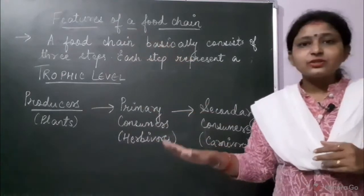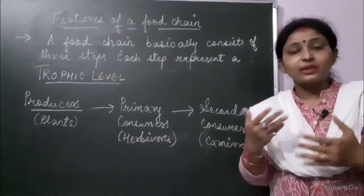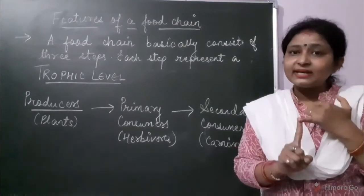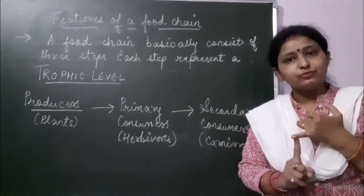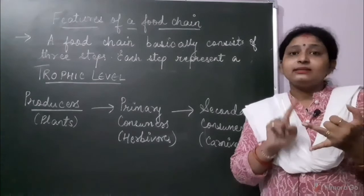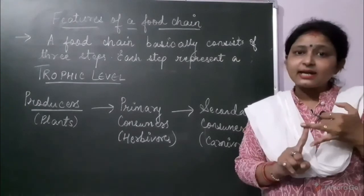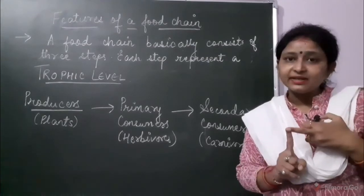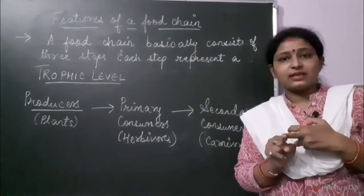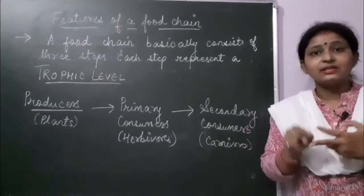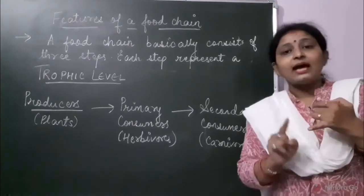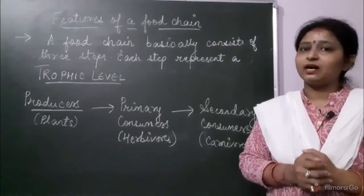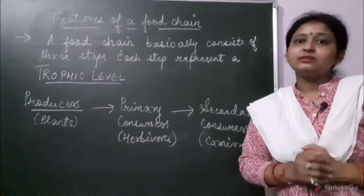Let us revise the features of a food chain. Producers will always be at the first level because they prepare food from inorganic substances. These producers are eaten up by herbivores — the primary consumers. Herbivores are eaten up by carnivores — the secondary consumers. Sometimes tertiary consumers are also present, and those tertiary consumers eat the secondary consumers, that is the primary carnivores. This was about the food chain.